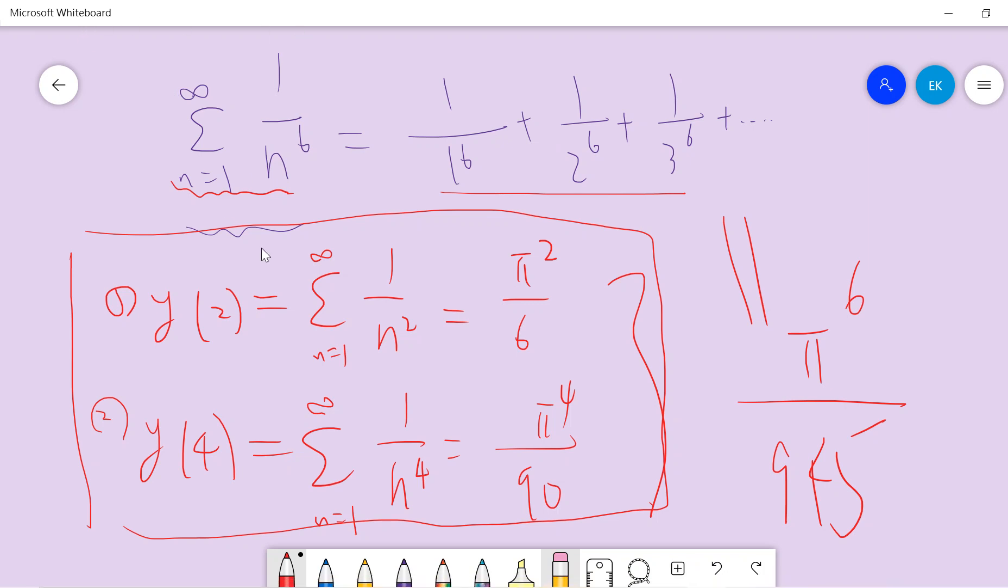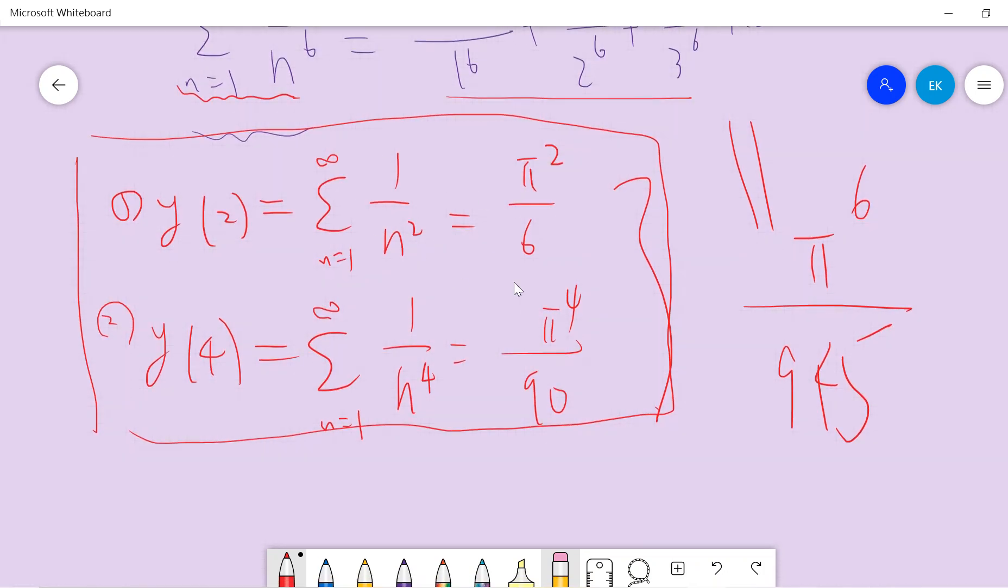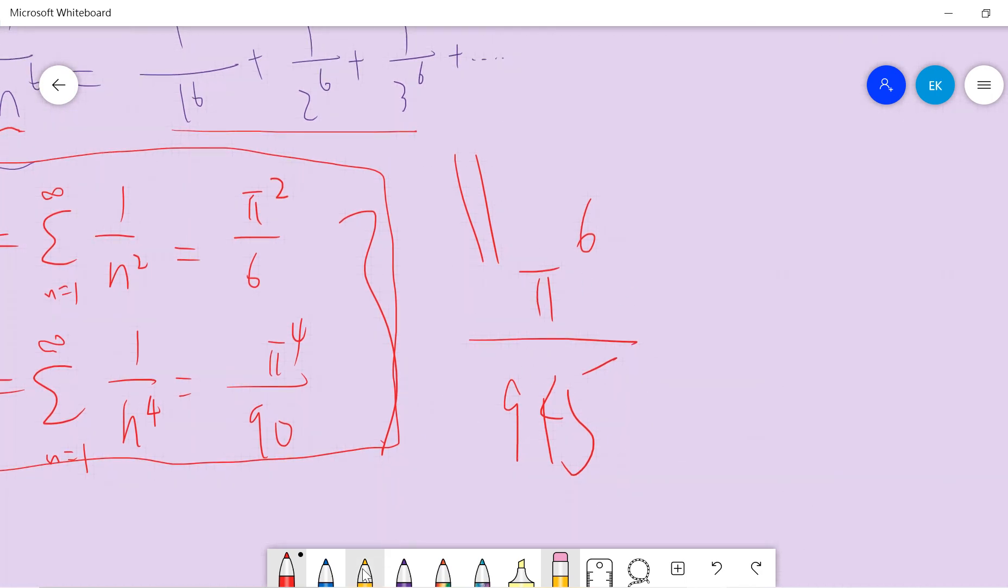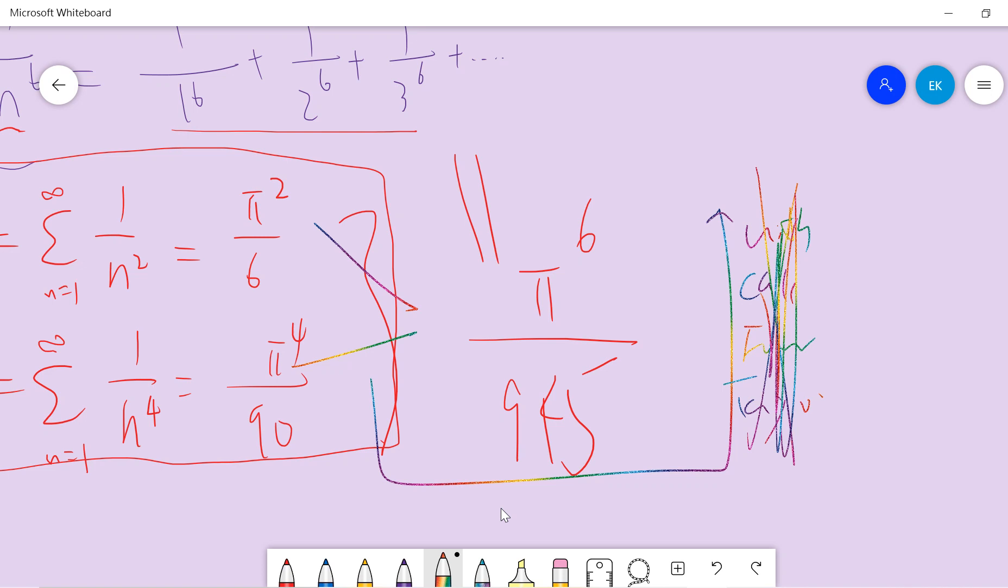But we want to prove it without using calculus. We only want to use these two facts, zeta 2 and zeta 4. Suppose we already know these two values, then we want to compute this. So the goal is we want to compute this just from these two, without using calculus or analysis type of expansion. Okay, so let's start.